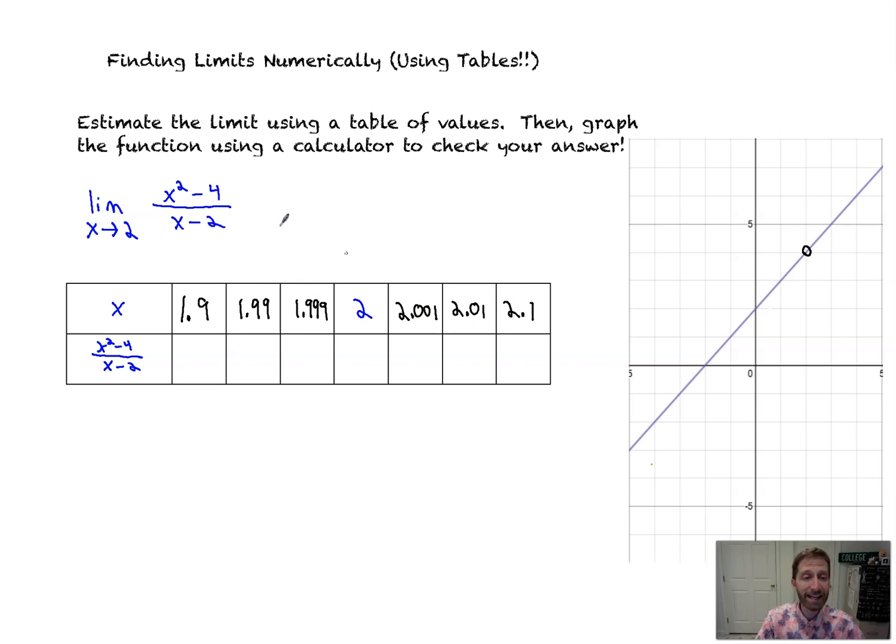And we're just going to plug these values into this function and see what we get, and the limit will appear. So I've already got those numbers plugged into my calculator. As a good chef always should be prepared on a cooking show, I've already got the meal cooked. So 1.9, we plug that in, is equal to 3.9. 1.99 is going to be equal to 3.99. 1.999 is 3.999. Now, at x equal to 2, when you plug that in the calculator, you're going to get an error. So we will get an error. We'll find out later on that that's considered actually indeterminate.